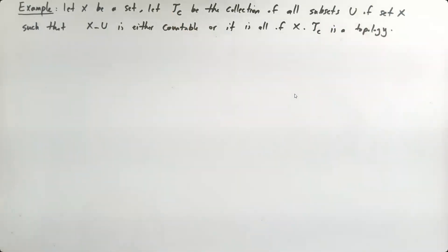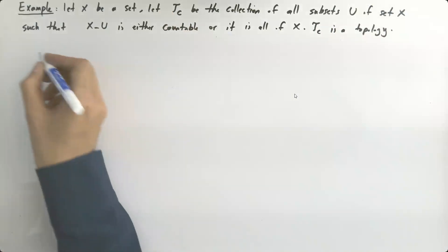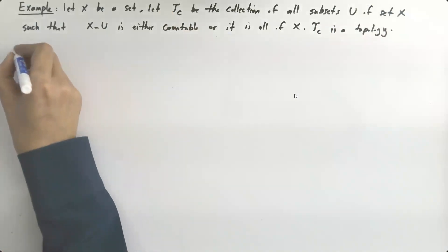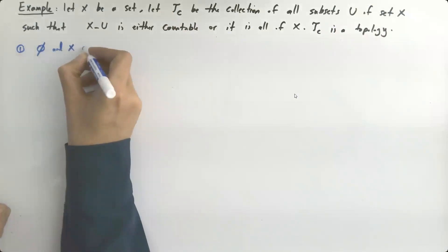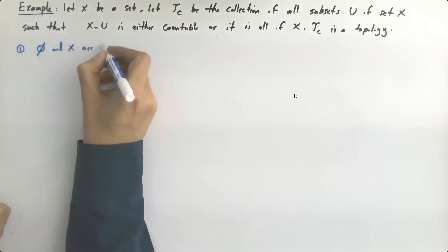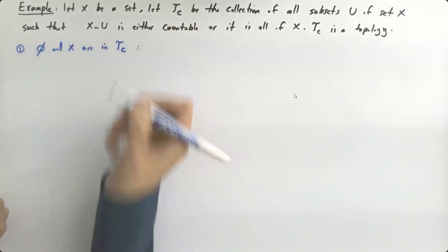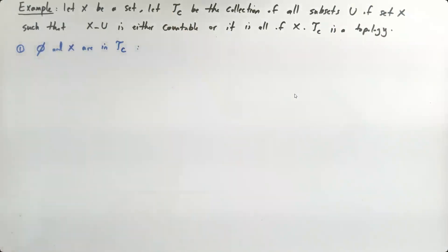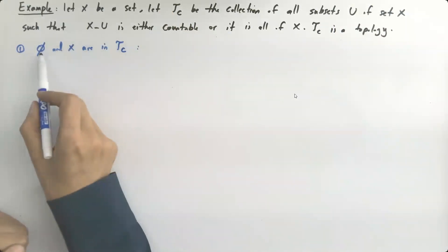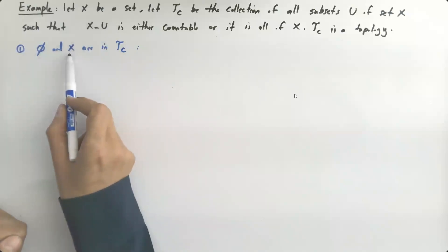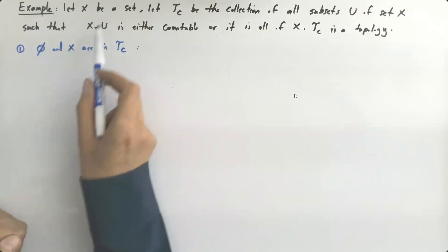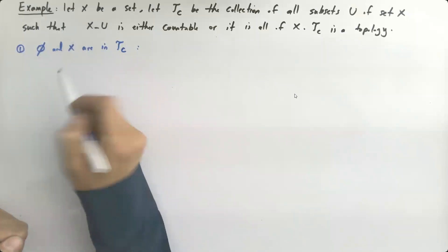To show that τ_C is a topology, we need to show three properties. The very first one: we need to show that the empty set and X are in τ_C. It means that U equals the empty set satisfies the property, and also U equals X satisfies this property.